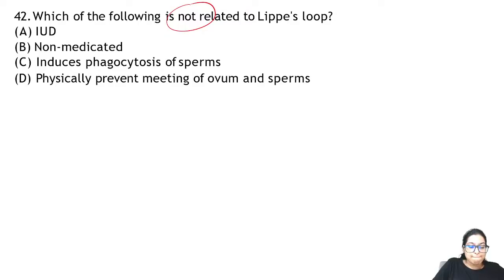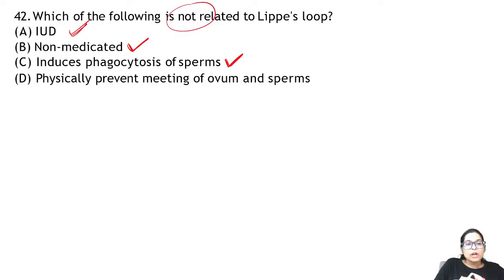Lippes loop is an IUD — a non-medicated intrauterine device. It acts by causing phagocytosis of sperm. So the last option about Lippes loop being related to hormones is not correct.